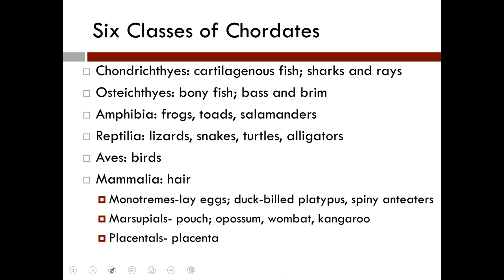The limbs of mammals are variously adapted for walking, running, climbing, swimming, burrowing, or flying. In most terrestrial mammals, the limbs are positioned more directly under the body than in extant reptiles, contributing to speed and agility. Monotremes lay eggs and include animals such as the duck-billed platypus and spiny anteater. Marsupial mammals have a pouch, including animals such as the wombat, kangaroo, and opossum. Placental mammals have a placenta.